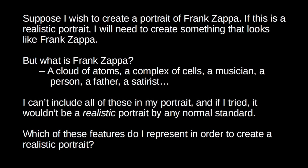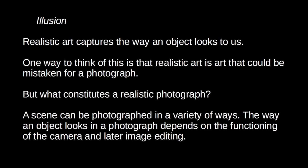For any object there are a variety of ways of understanding and classifying it, and you might attempt to make salient any of these in an artistic representation. So the question is: which of these features constitutes a realistic representation? The usual assumption is that the point of realistic art is to capture the way that an object looks to us — so the David Eichenberg painting looks like its subject, and the Francis Bacon painting does not.